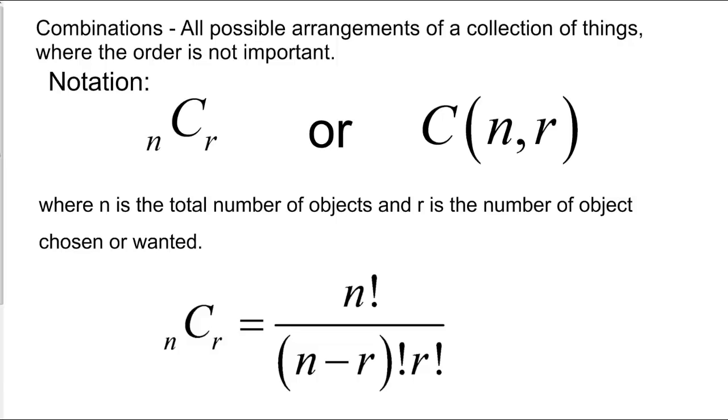Next, we're going to talk about combinations, and combinations are arrangements, but in this case, the order in which you put them doesn't matter. Notation for combinations is either nCr or C(n,r). Once again, n is the total number of objects, and r is the subset of items taken from the total number of objects. Notation goes into a computation of n factorial over (n minus r) factorial, that's the same as permutations, divided by r factorial.